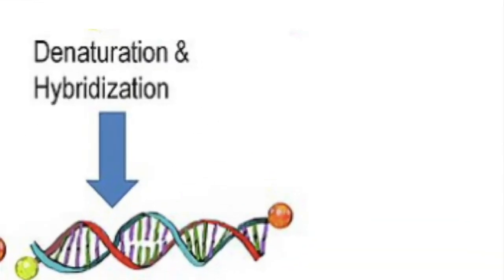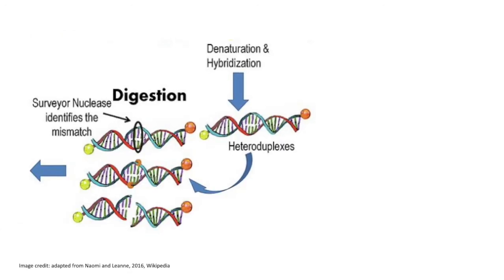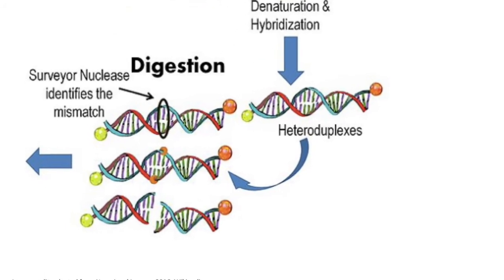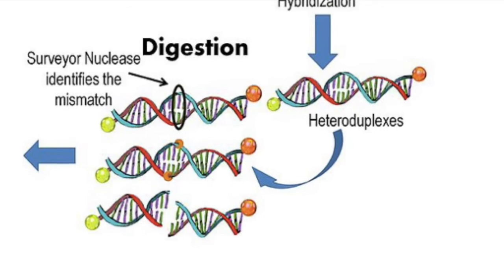So to use these nucleases in the assay, you will first denature the PCR products, then re-anneal. As the DNA re-anneals, some edited strands will pair with unedited strands, and you will have a mismatch.